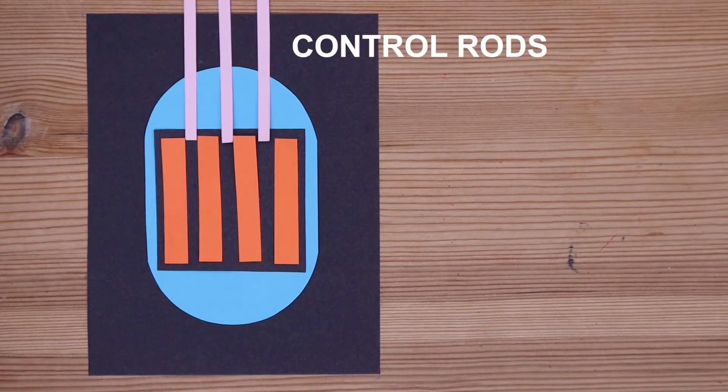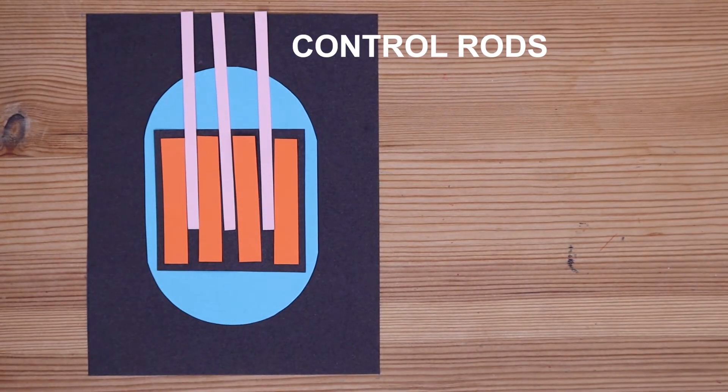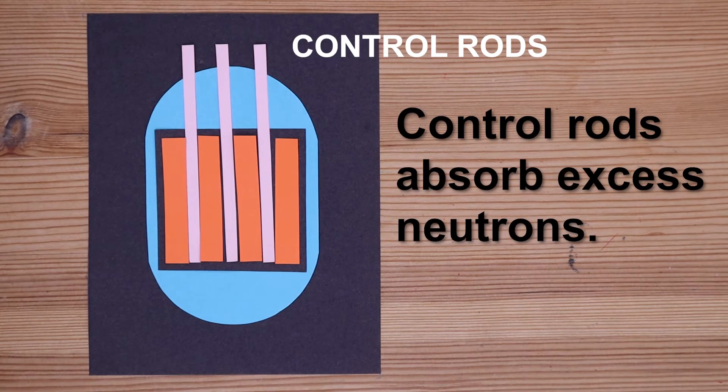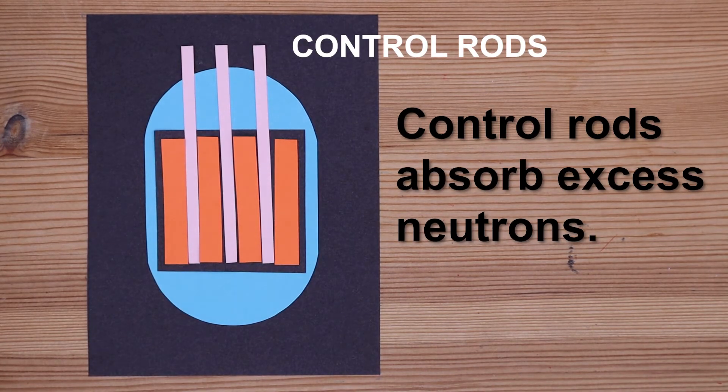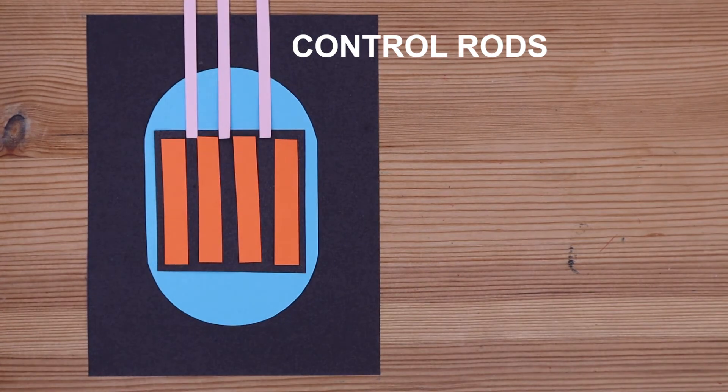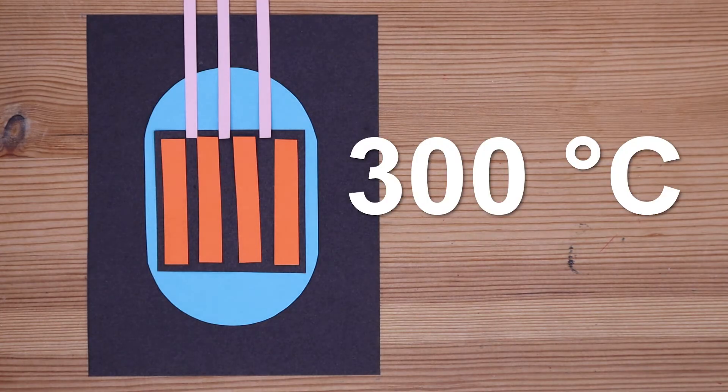When the rate of reaction is too high, we need to lower control rods to absorb neutrons, preventing them from traveling between fuel rods. Once the chain reactions are reduced to a safe rate, we can then raise the control rods. A typical nuclear reactor functions at 300 degrees Celsius.